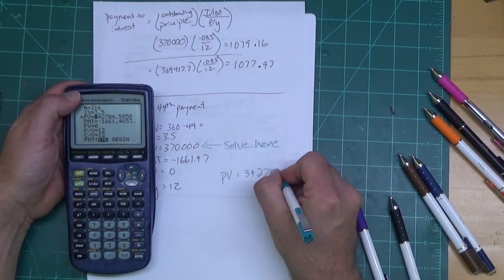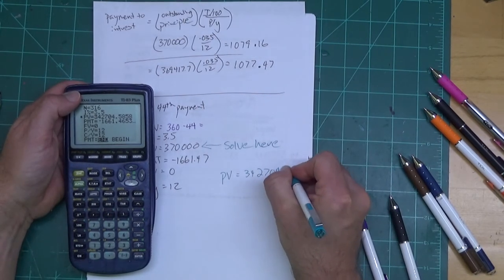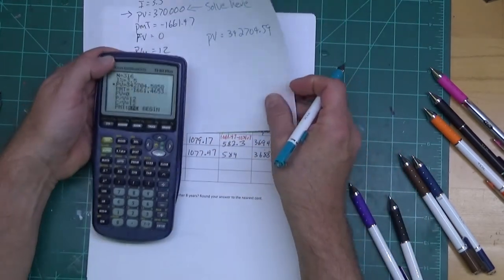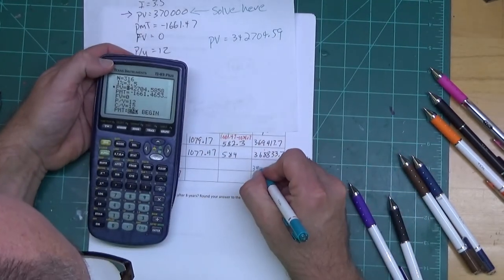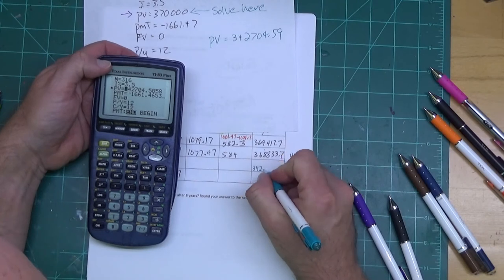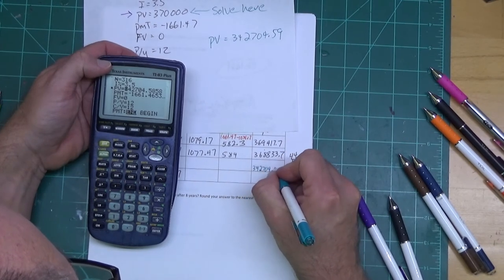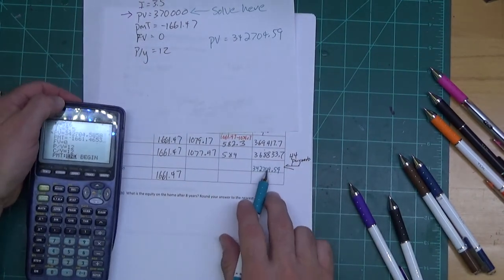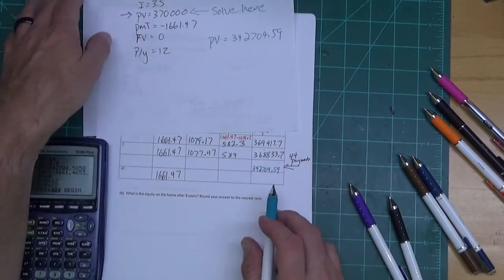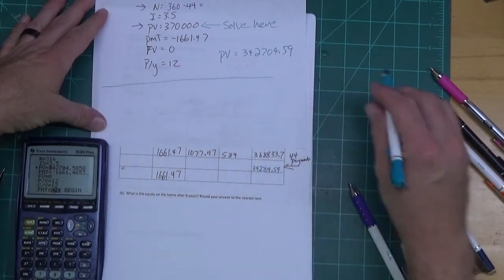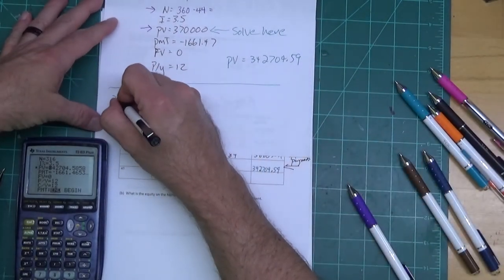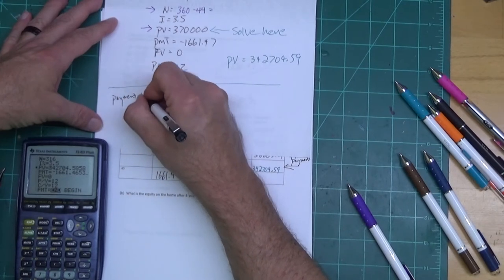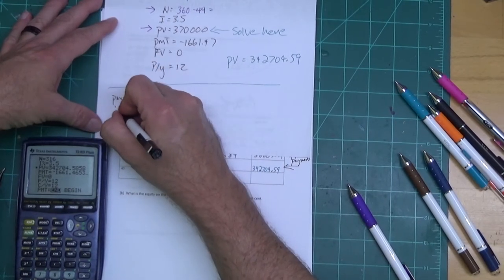And my PV comes out to be 342,704.59. And that's what we're going to put right here: 342,704.59. Now I'm going to work this row using this number.